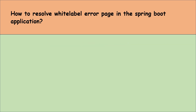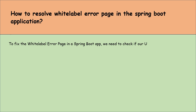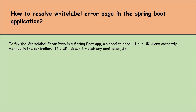How to resolve the white label error page in a Spring Boot application? To fix this, we need to check if our URLs are correctly mapped in the controllers. If a URL doesn't match any controller, Spring Boot shows this error page. We should add or update our mappings to cover the URLs we are using.